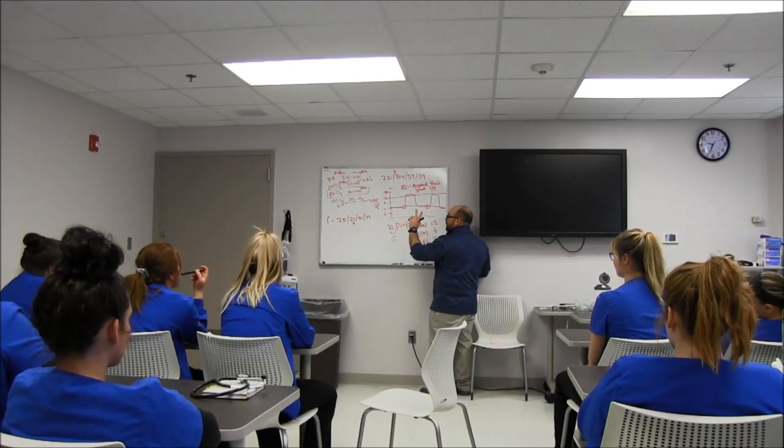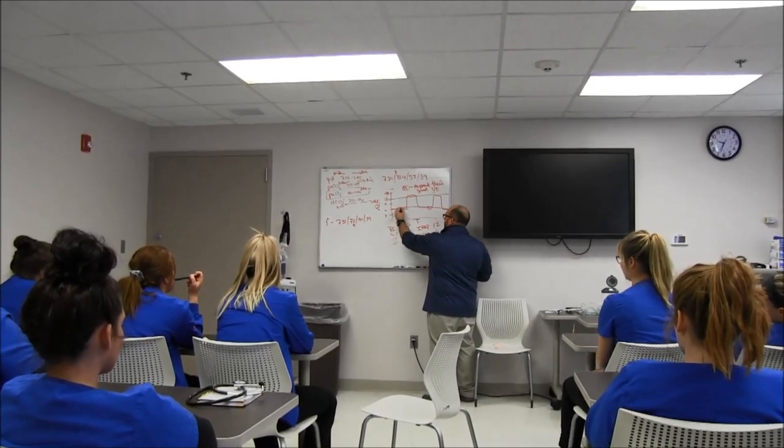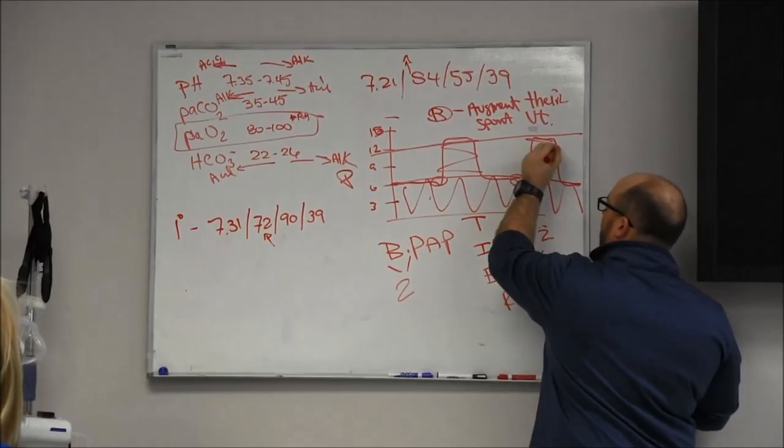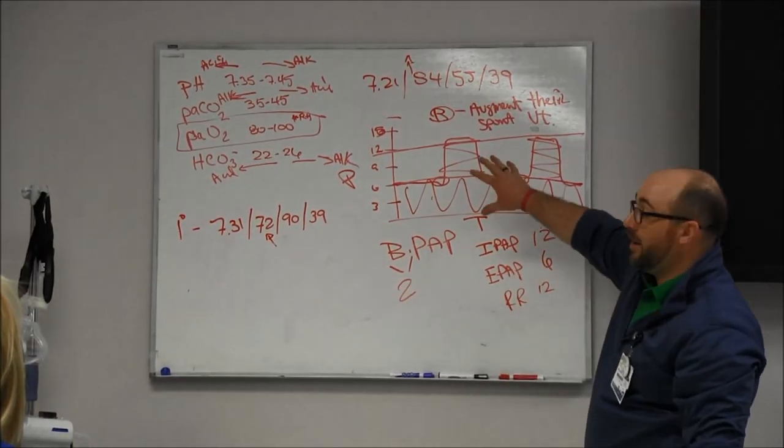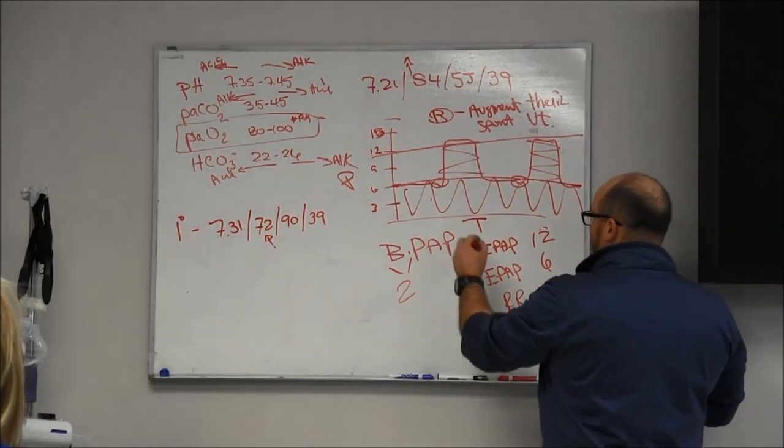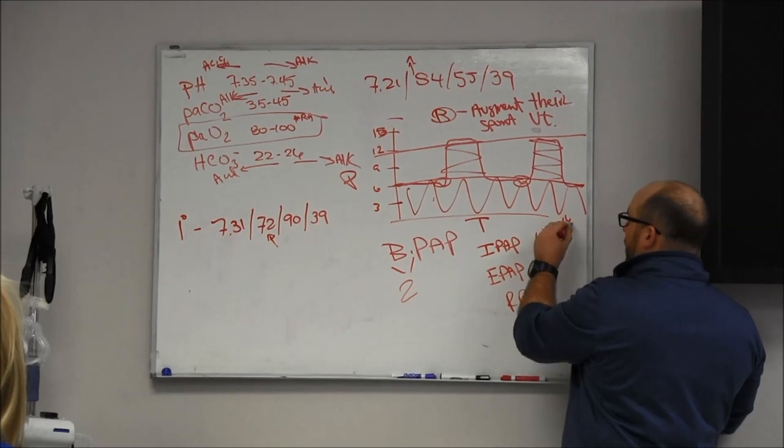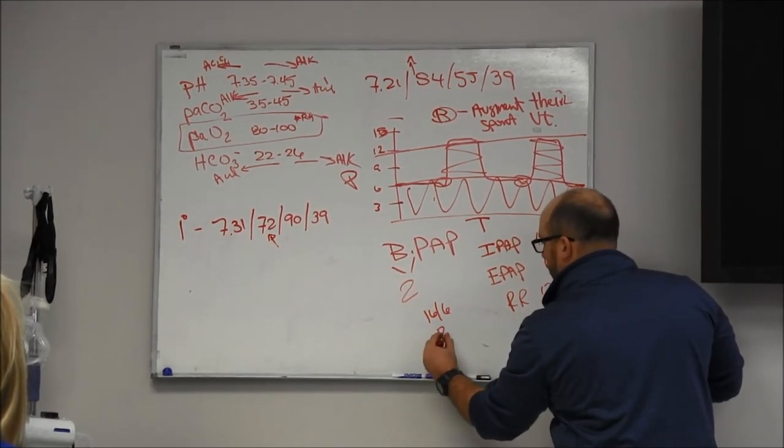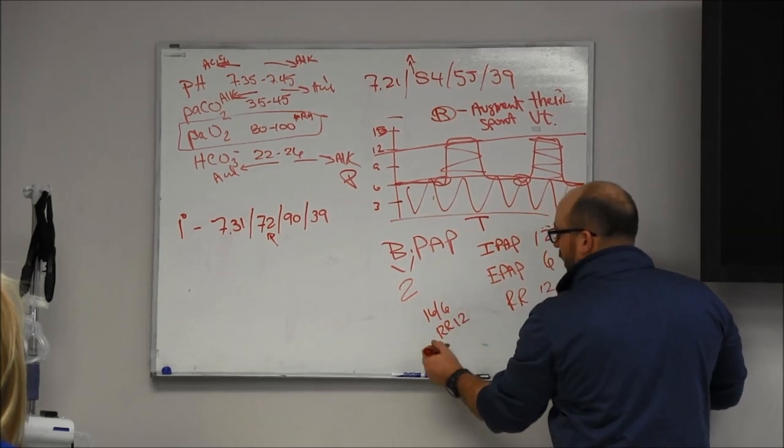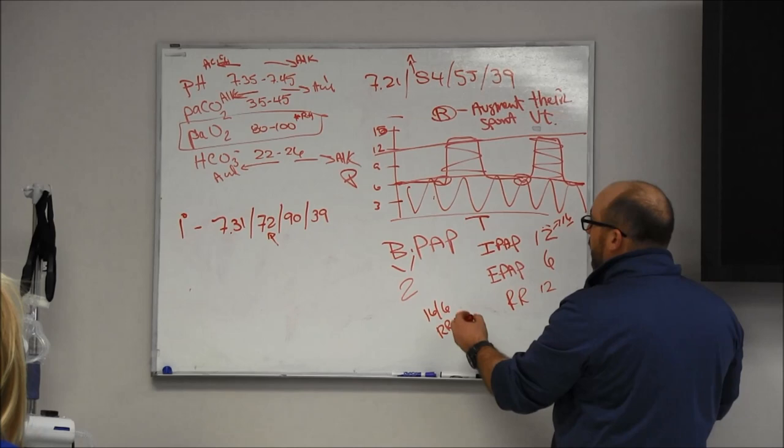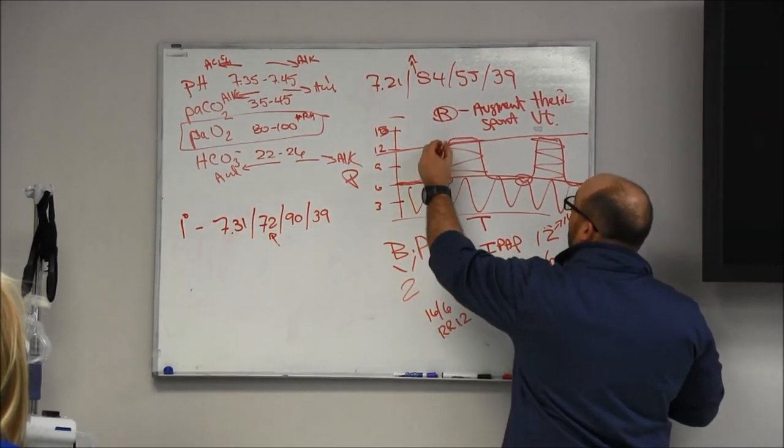So you would increase IPAP. I'll show you why. If you block this thing off, I have those two things: oxygenates and ventilates. This is where you're oxygenating, this is where you're ventilating. If you increase the area of any one of these spaces, you're going to help that system more. So if we take this 12 and went to 16 with it. So now we are 16 over 6 with a respiratory rate of 12, but really we call it a backup rate because they're breathing on their own maybe at like 24.